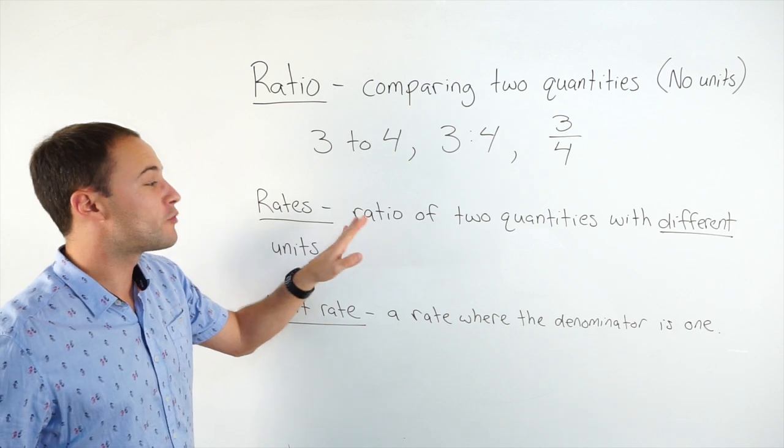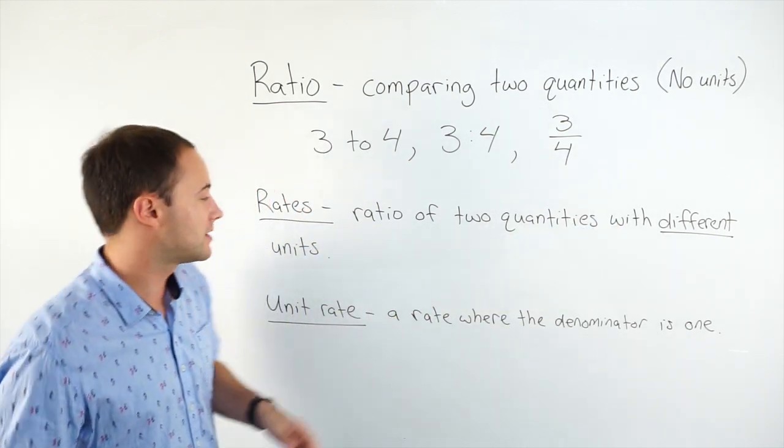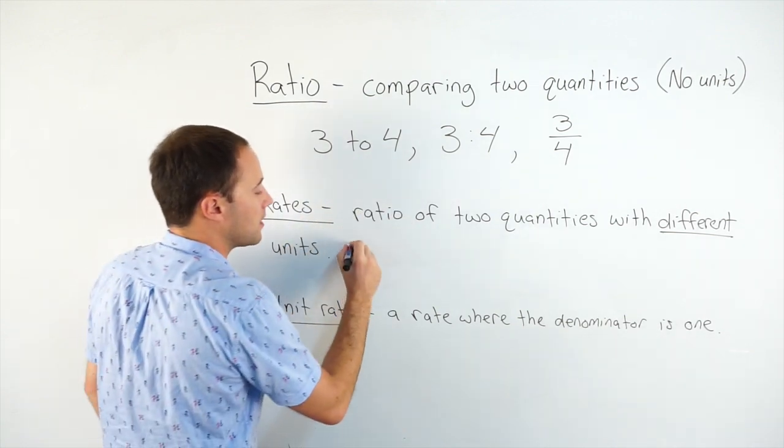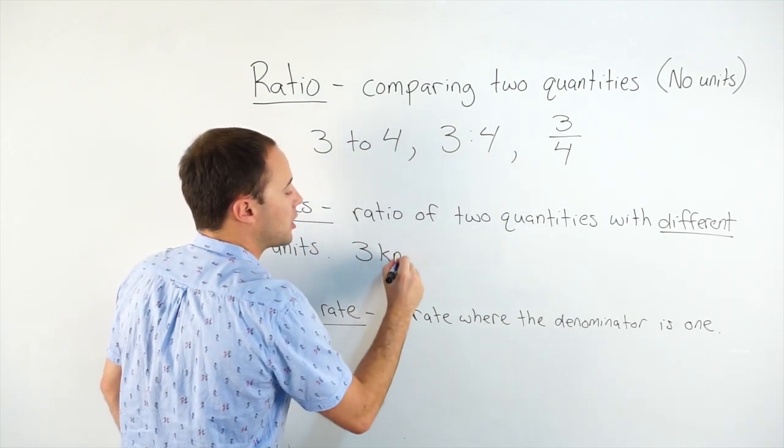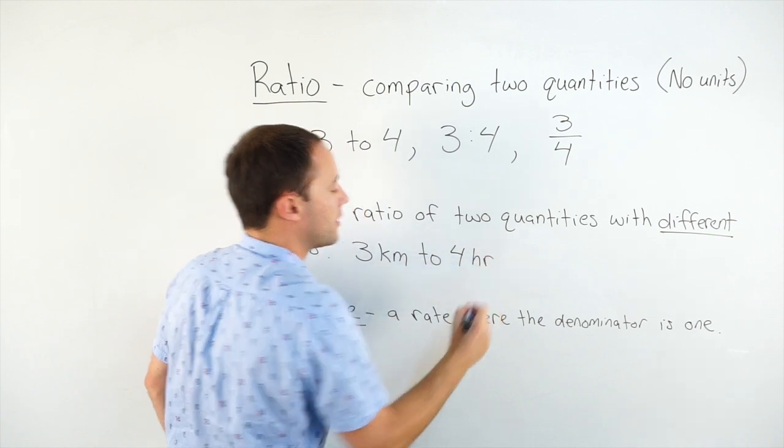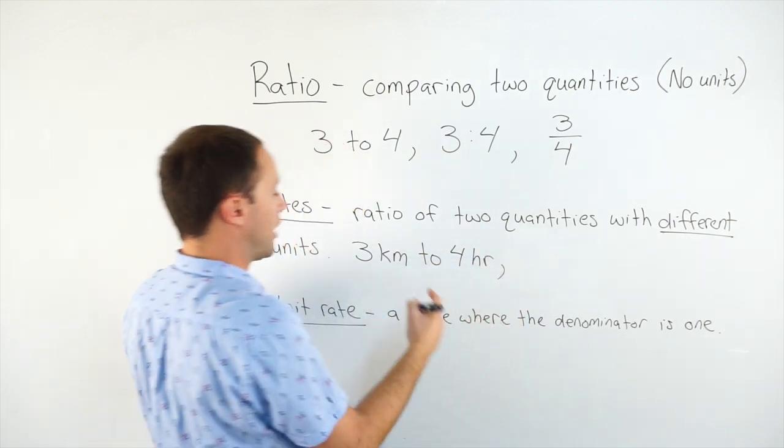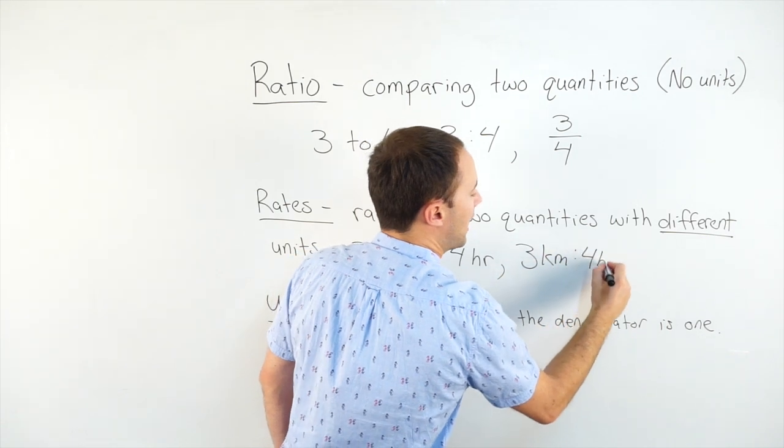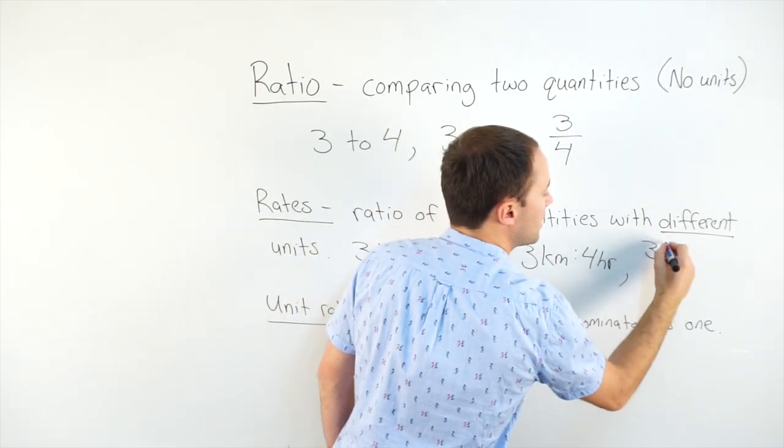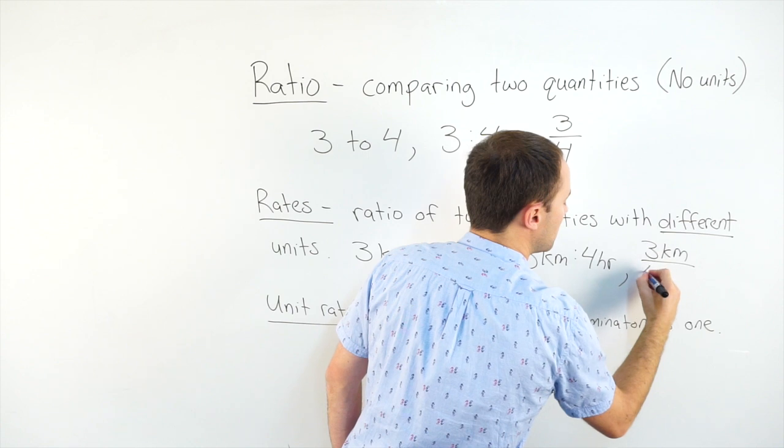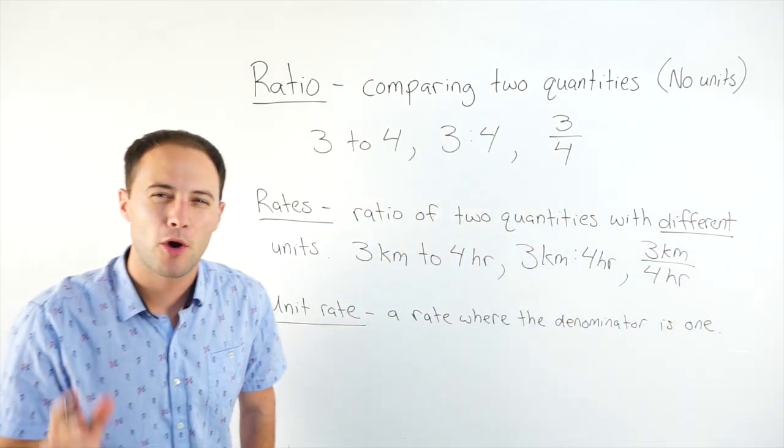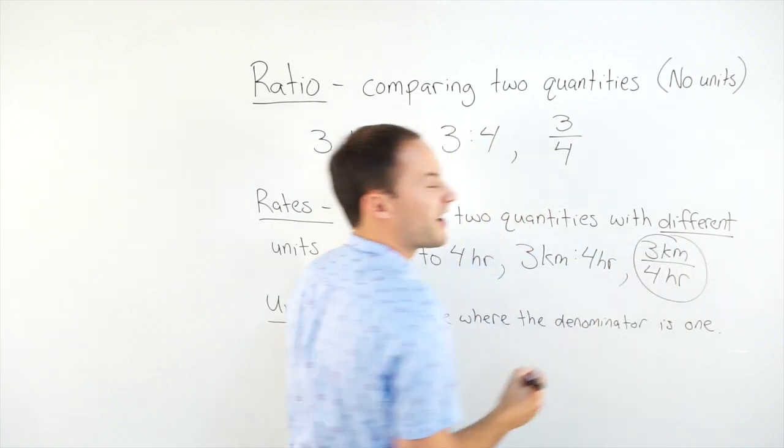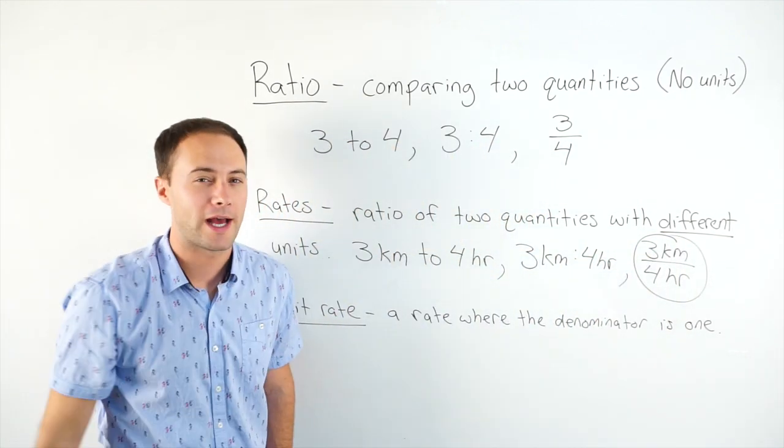And now rates, those are ratios of two quantities, but they have different units. So for example, instead of just three to four, I could say three kilometers to four hours. Or I could write it this way, three kilometers to four hours, or as a fraction, three kilometers every four hours. With rates, the most common way to see it is like a fraction. When we're doing rates, most of the time they're going to write it as a fraction.